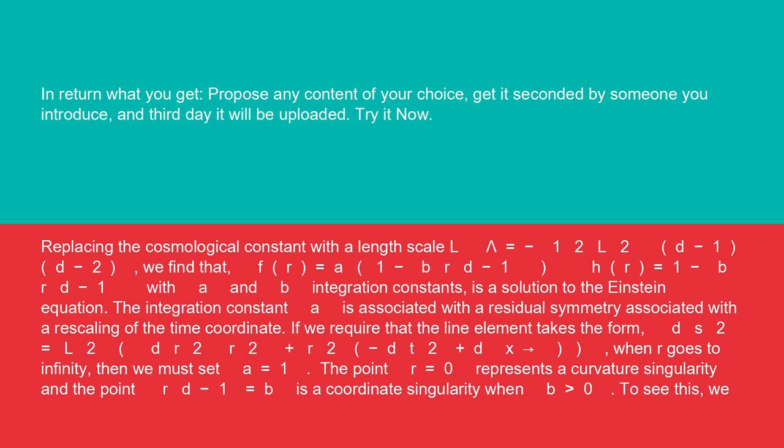If we require that the line element takes the form ds² = L² (dr²/r² + r² (-dt² + dx²)) when r goes to infinity, then we must set a = 1.